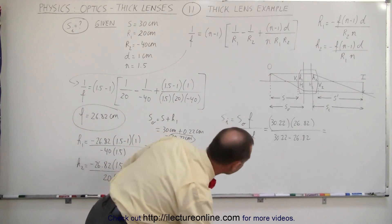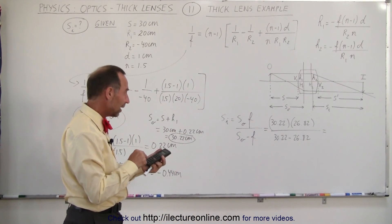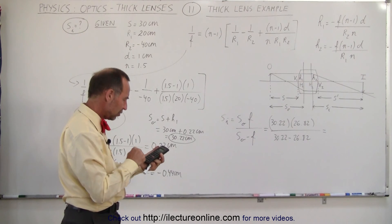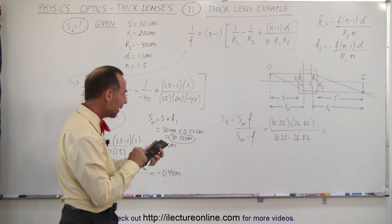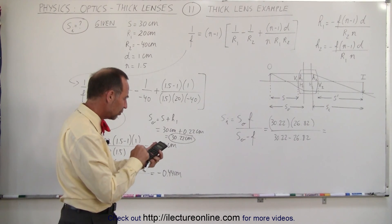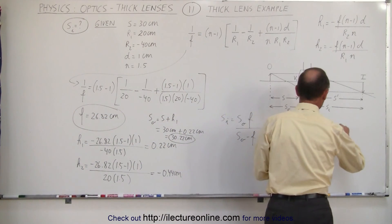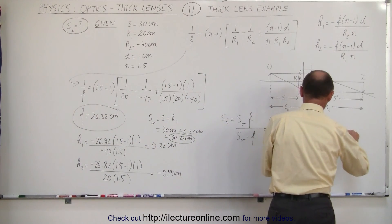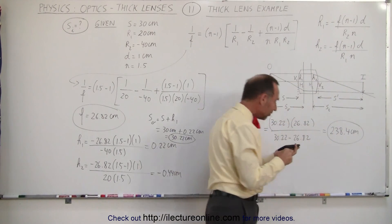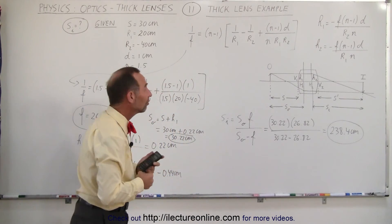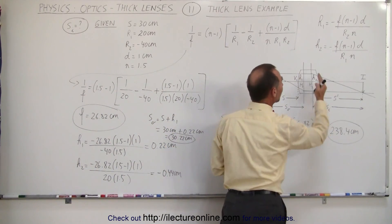Now what we need is a calculator. 30.22 times 26.82, that's the numerator, divided by 30.22 minus 26.82. And that gives us a distance of 238 point to one decimal place for centimeters. So that's the distance to the image, the distance from the principal point to the image, not the distance from the lens to the image.